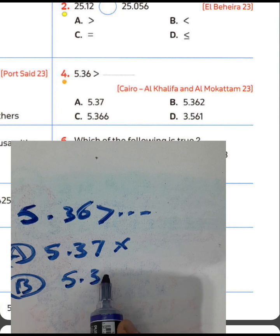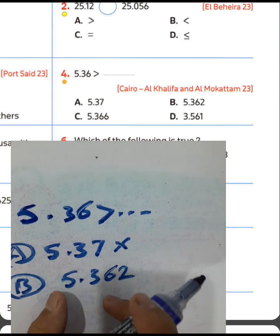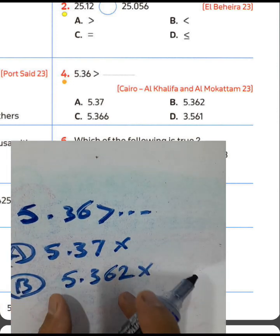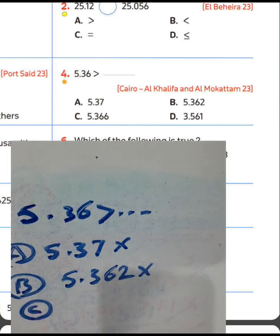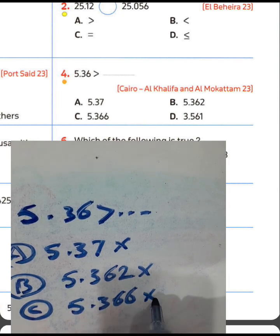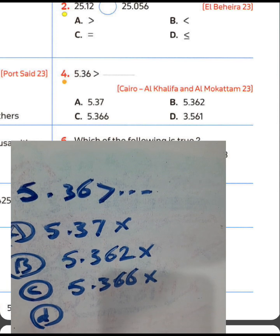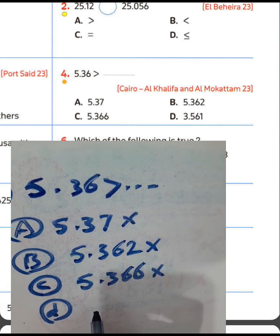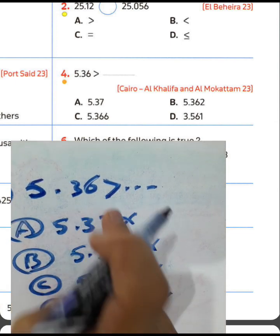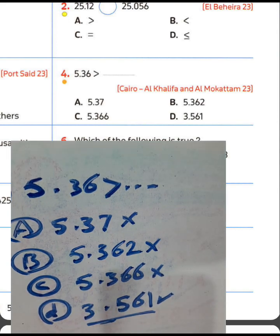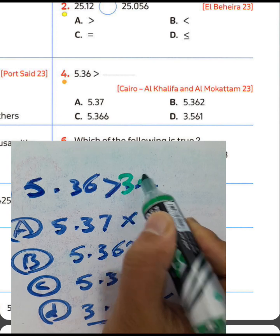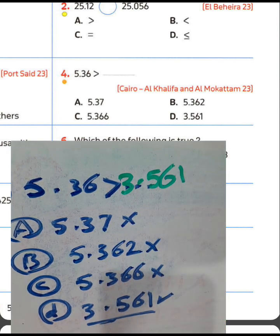Letter D: look at 3.561 — it's false because 5 is greater than 3. So you can write letter D in the space: 3 and 561/1000. Choose letter D for this example.